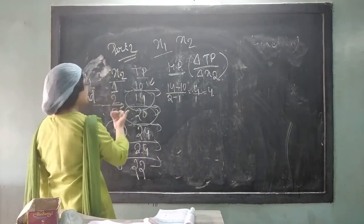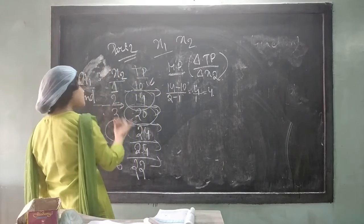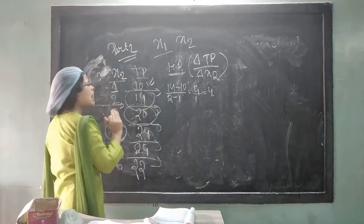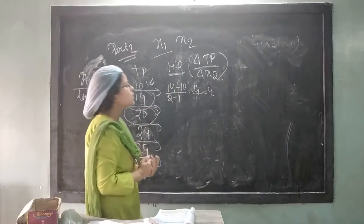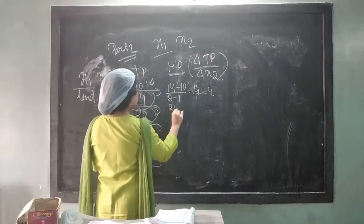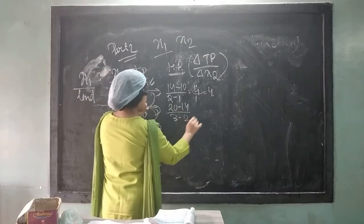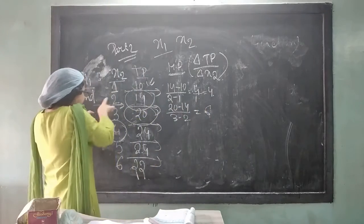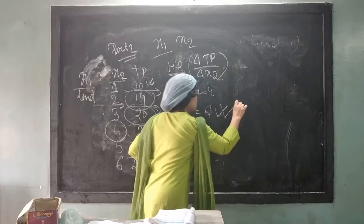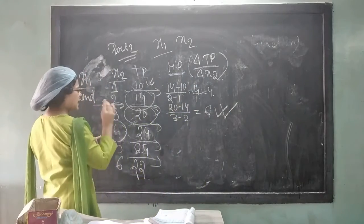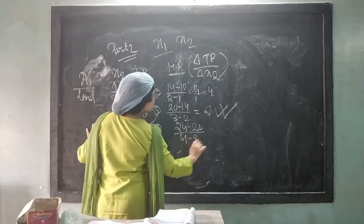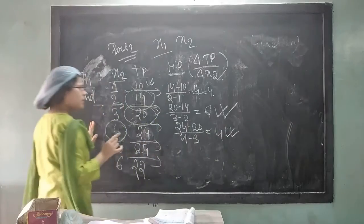So what is the change in marginal output? 4 means when in a plot of land, one extra laborer has been employed, it helps to increase the total amount of production by 4 units. So when 3 laborers have been employed, then 20 minus 14 into 3 minus 2, it is coming 6. When 4 laborer has been employed, then it helps to enhance the total product by 4 unit.